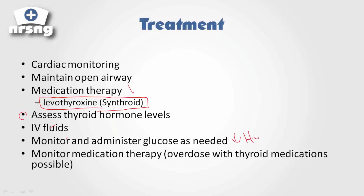We're going to monitor and administer glucose as needed, because this can lead to hypoglycemia. Then we're going to monitor medication therapy. Overdose with thyroid medications is very possible, and if we overdose, this can lead to the opposite effect — hyperthyroidism — which would then result in the hypermetabolic state and kind of the exact same thyrotoxicosis. Monitoring medication therapy is incredibly important in these patients.